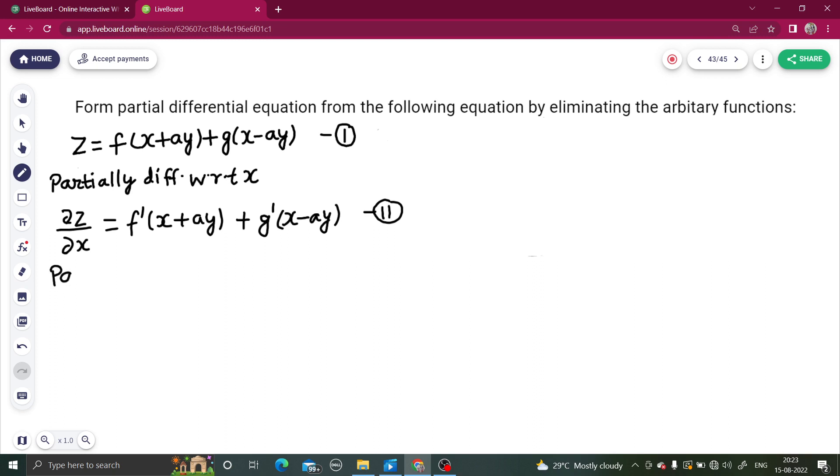Next step is to partially differentiate with respect to y, taking x as constant. From there you will get del z by del y equal to f dash (x plus ay). If you go inside, derivative of x is 0 and that of ay is a, because this time you are doing partial derivative with respect to y. Similarly, g dash (x minus ay), derivative of x is 0 and that of minus ay is minus a. This will be your equation number third.